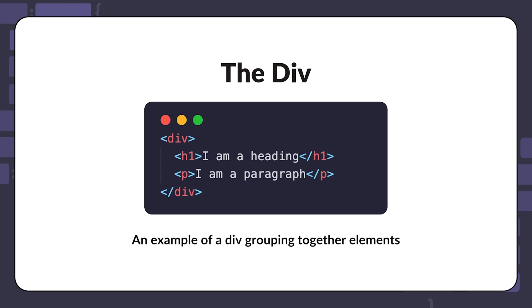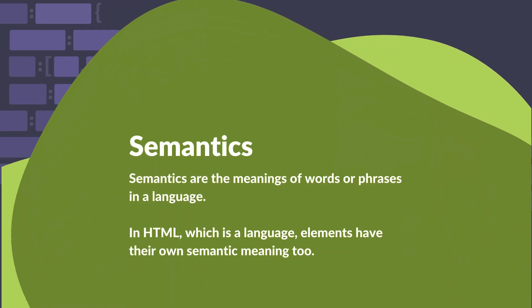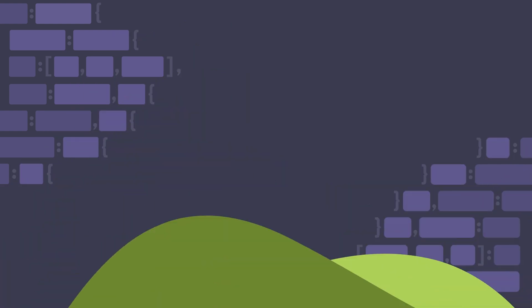Just be aware that there might be better elements to use when grouping these together. You might choose a section element, for example. This is because the section element has semantic meaning. Semantics are the meaning of words or phrases in a language. In HTML, which is a language, elements have their own semantic meaning too.